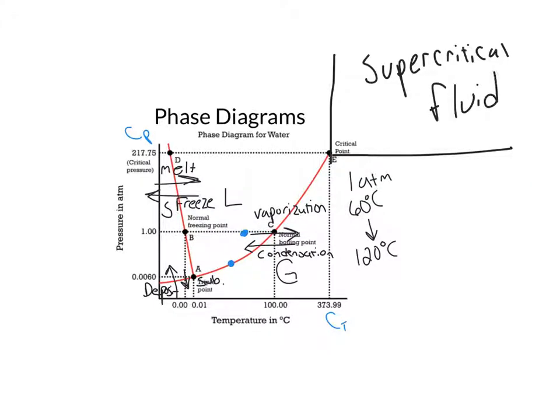A supercritical fluid is a state that's indistinguishable between liquid and gas. So it would look like a liquid and a gas, because where it's such a high temperature, it wants to be a gas. Where it's such a high pressure, it wants to be a liquid. So it's kind of fighting both of those.